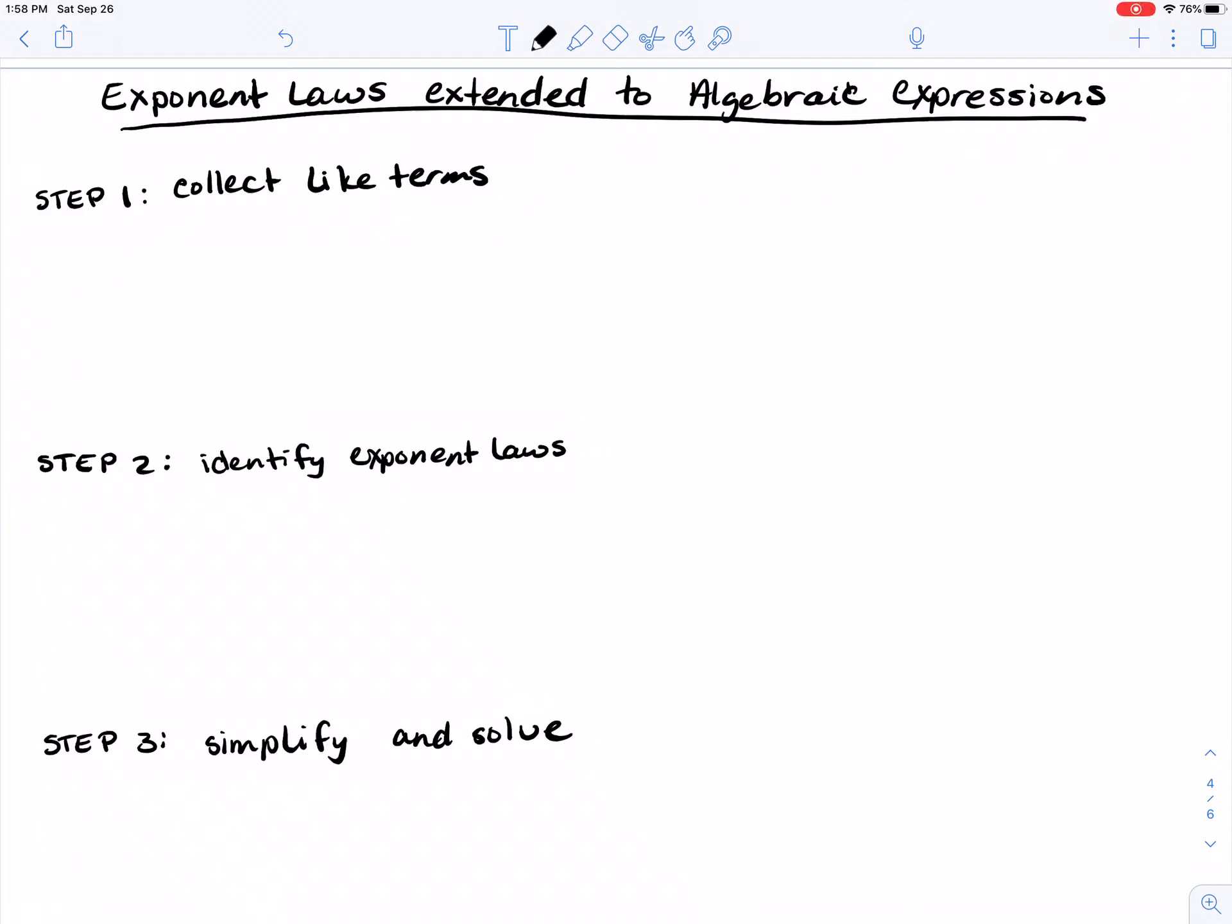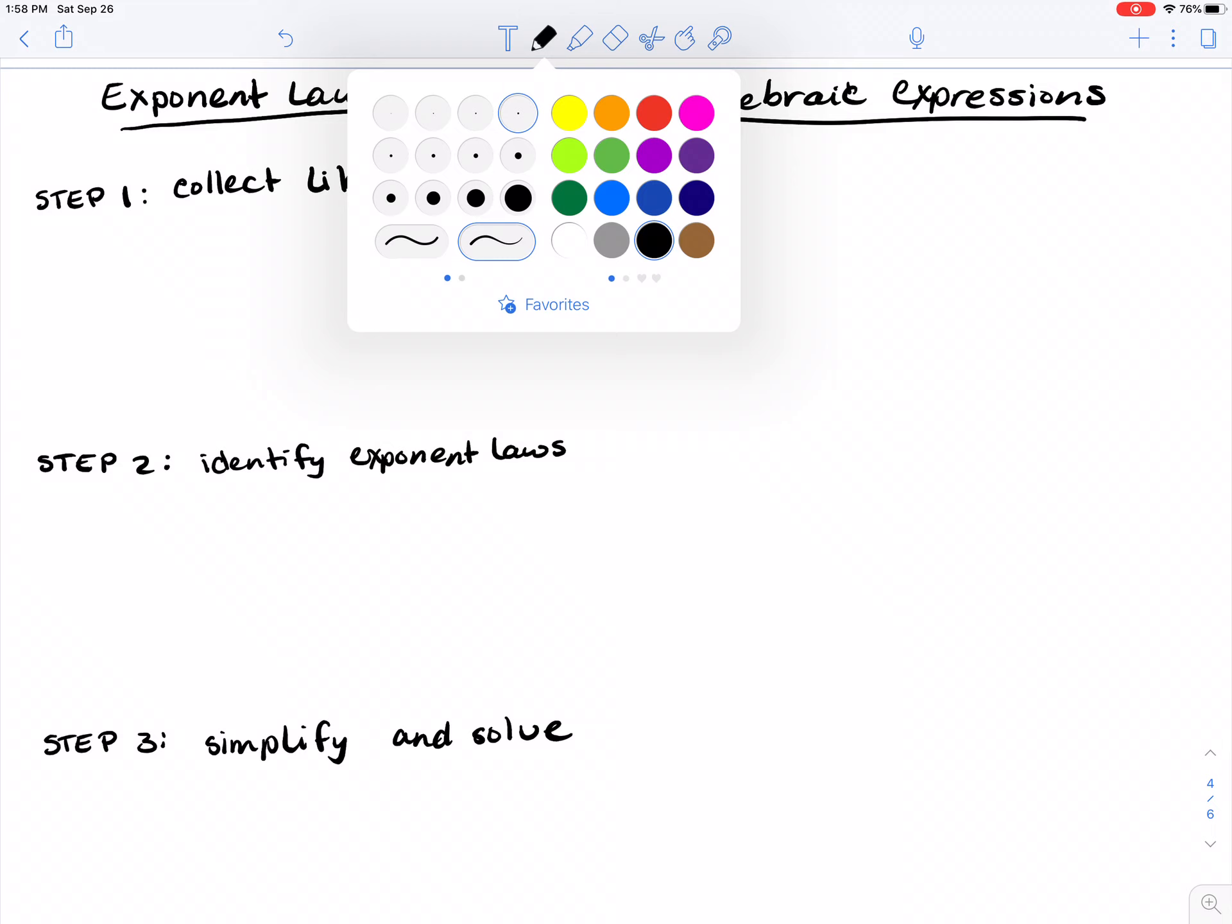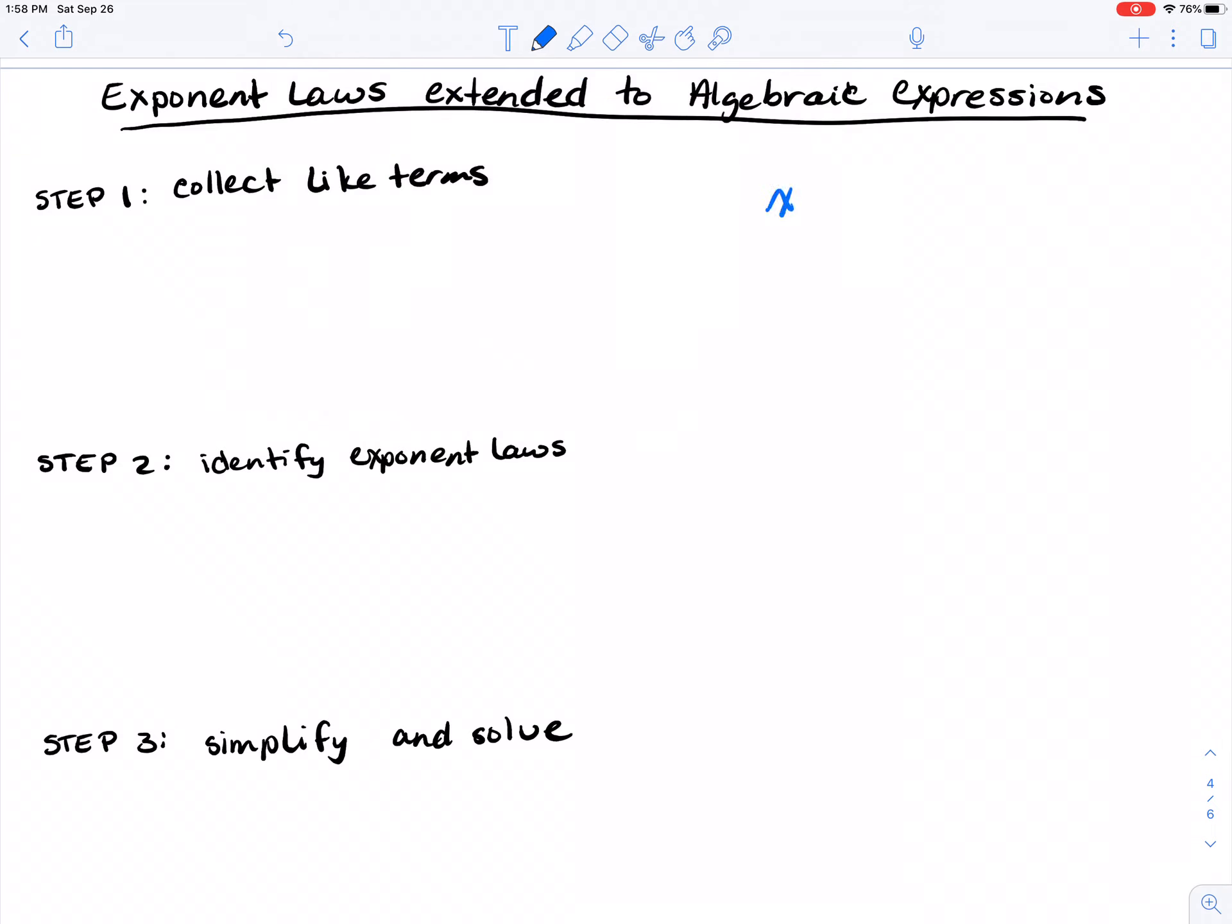Let's look at exponent laws and extending those to not just numeric or rational expressions, but algebraic expressions. An example of one is x cubed y squared. This is an algebraic expression because it has variables with exponents.